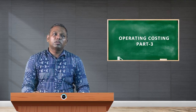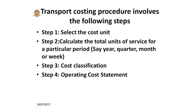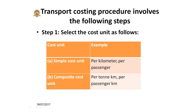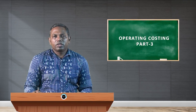Step number one is selecting the cost unit. There are two types of cost unit: simple cost unit and composite cost unit. If you want to calculate the cost per kilometer or per passenger, that is a single cost unit called a simple cost unit. If you are clubbing two cost units like ton and kilometers — cost per ton per kilometer — then it is called a composite cost unit.